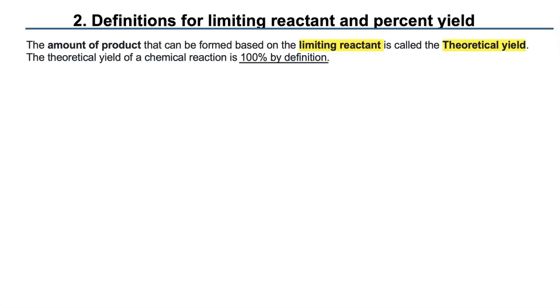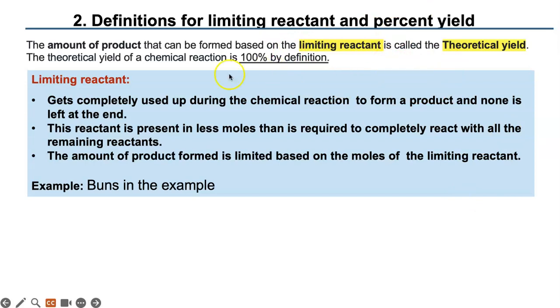So you have to calculate how many grams, moles, molecules, or volume that's going to be. Then what is the limiting reactant? It is the one that gets completely used during the chemical reaction to form a product, and none is left at the end. The others will remain at the end, unconsumed. This reactant is present in less moles than is required to completely react with the other remaining reactants. So the amount of the product formed is based and limited to the moles of the limiting reactant.